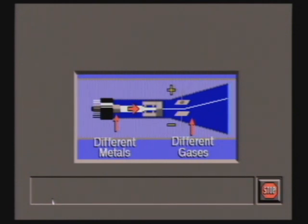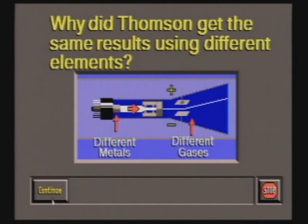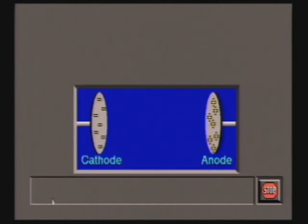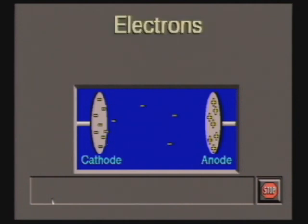Through repeated experiments, Thomson showed that the behavior of the negatively charged particles was independent of the elements present in the cathodes, glass, or gases. Thomson concluded that he always got the same results because these charged subatomic particles, now called electrons, are universal constituents of all atoms. Cathode rays are really electrons that have been pulled away from their atoms and flung from the cathode to the anode by electrical forces.